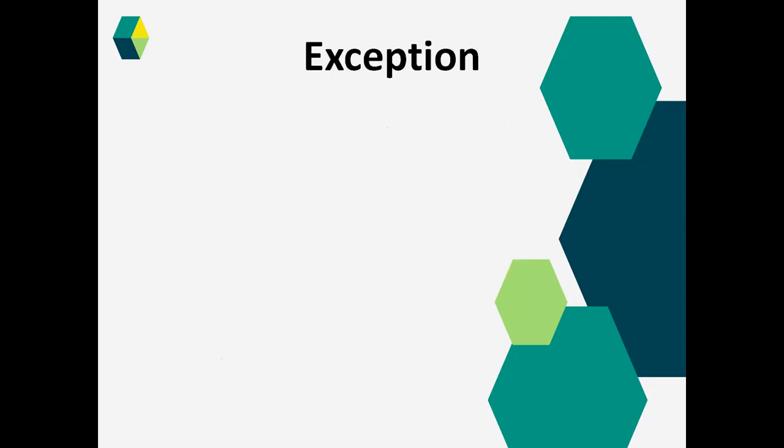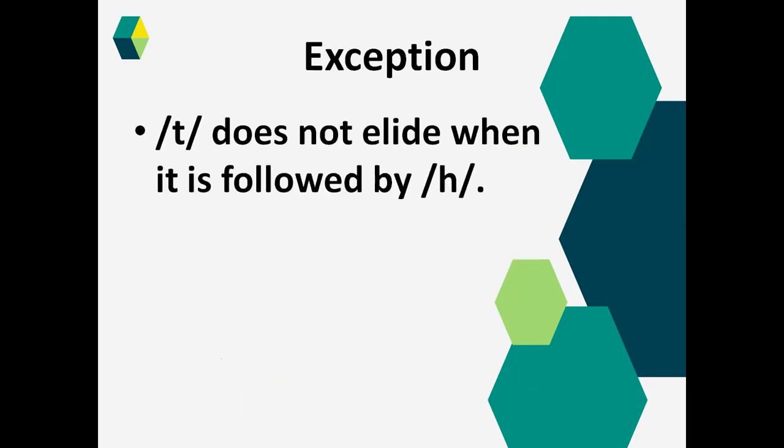Exceptions are also here. The exception is the same as with the /d/ sound elision. The /t/ does not elide when it is followed by the /h/ sound. So one condition is off — before /t/ there should be a voiceless consonant, but if the /h/ sound comes after /t/, we are not going to elide the /t/ sound. It means the /t/ sound will stay there.